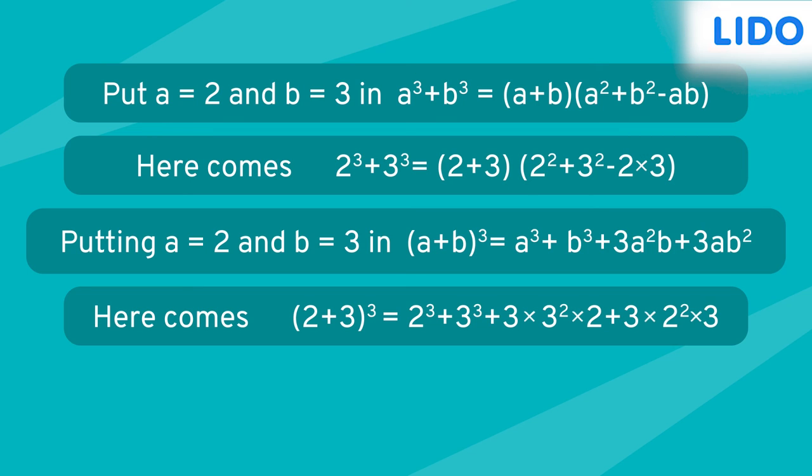Do you see something here? Observe carefully. 2 cube plus 3 cube is present within the expansion of (2 plus 3) the whole cube, with two extra terms: 3 multiplied by 3 squared multiplied by 2, and 3 multiplied by 2 squared multiplied by 3, which are present in addition to 2 cube plus 3 cube.